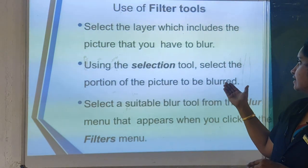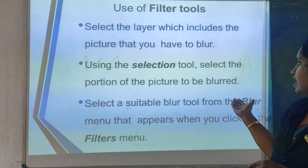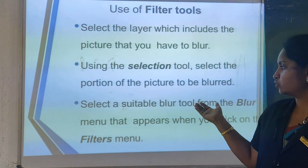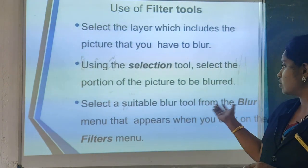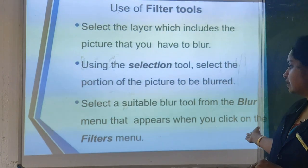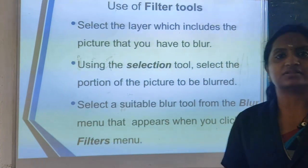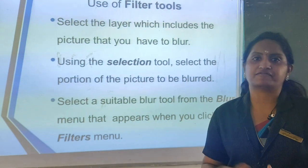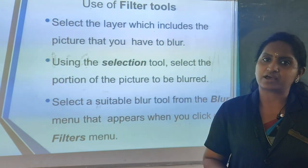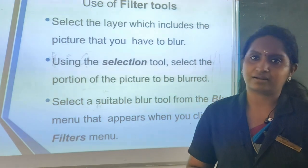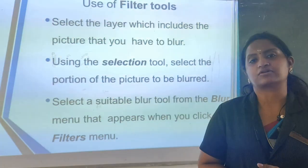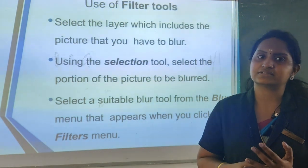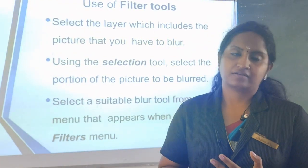You have a selection tool and also filters in the GIMP window. You have a blur option — you can use different types of blur options in the filter menu in GIMP. In the GIMP window, go to the filter menu, choose the blur option, and you have different types of filter options. Select blur and you can adjust the filter effect.